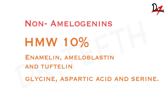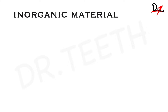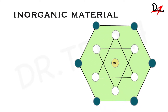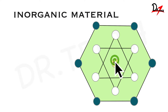Talking about the inorganic material, which is 96 percent — here we have hydroxyapatite. Hydroxyapatite is the inorganic material of the enamel. If I zoom in, you can appreciate that the hydroxyapatite crystals are hexagonal in shape. We are looking at the cross section here, so they are hexagonal in cross section.